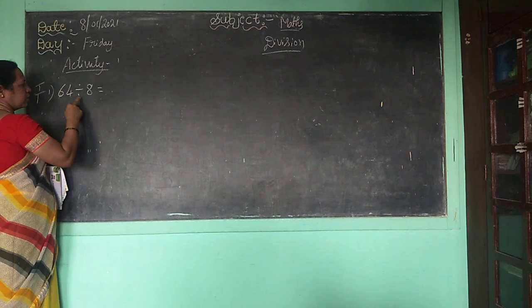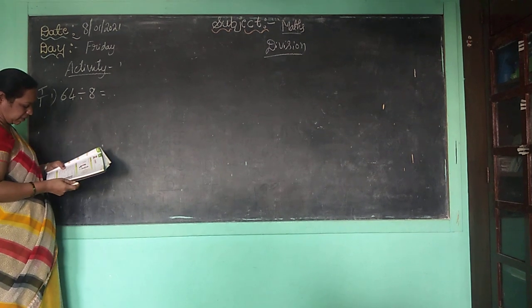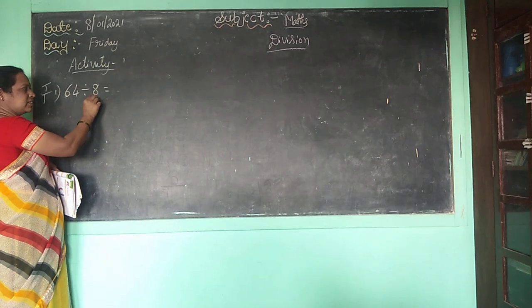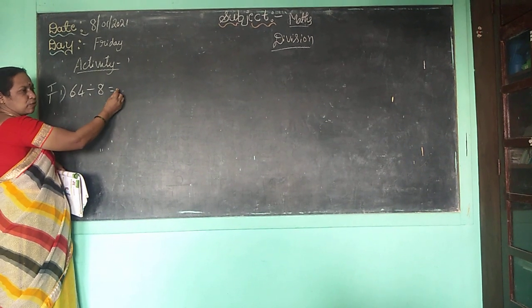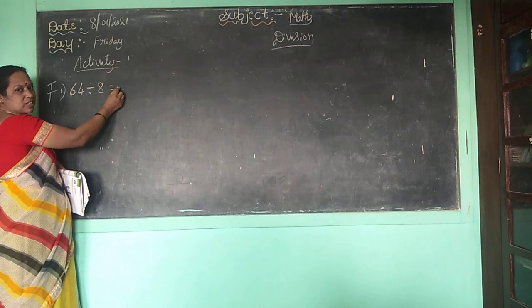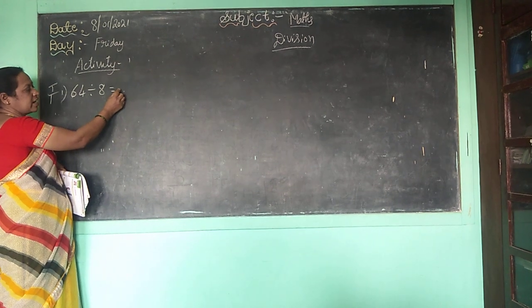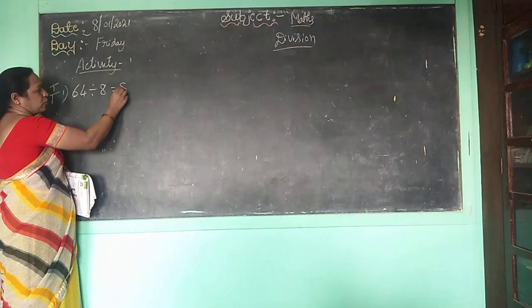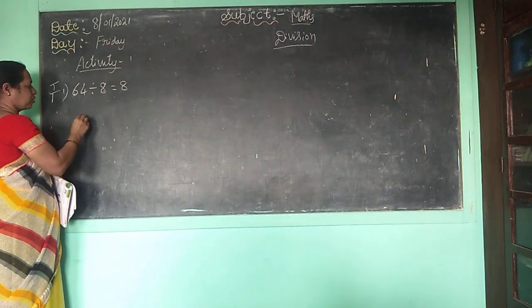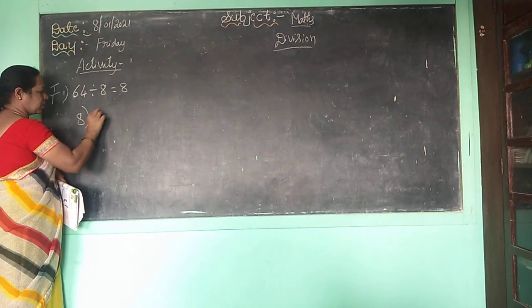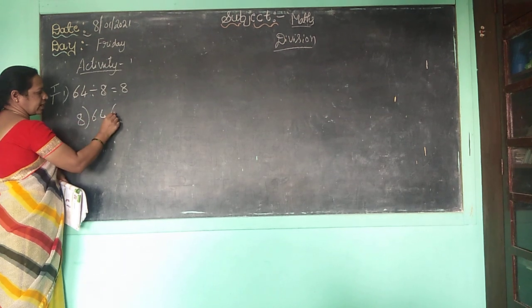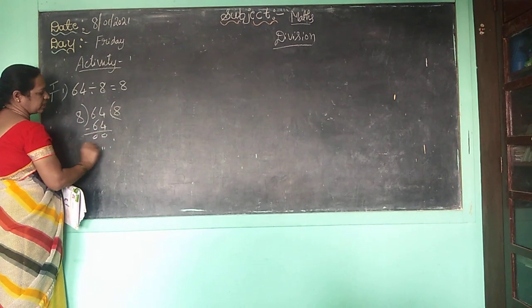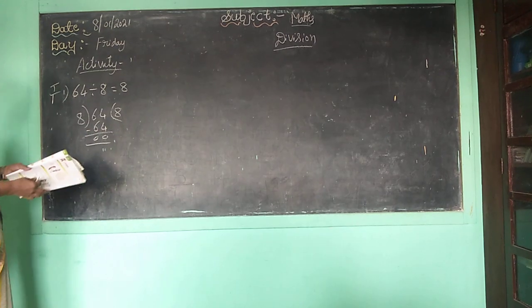64 divided by 8 — using the multiplication table: 8 ones are 8, 8 twos are 16, 8 threes are 24, 8 fours are 32, 8 fives are 40, 8 sixes are 48, 8 sevens are 56, 8 eights are 64. So 8 eights are 64. Using the multiplication table.